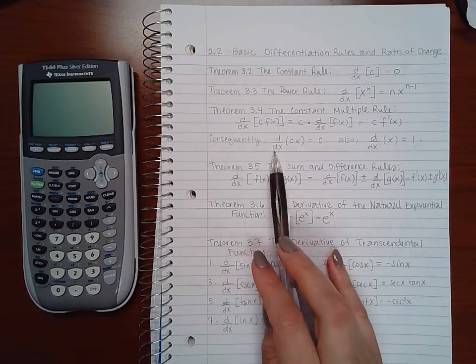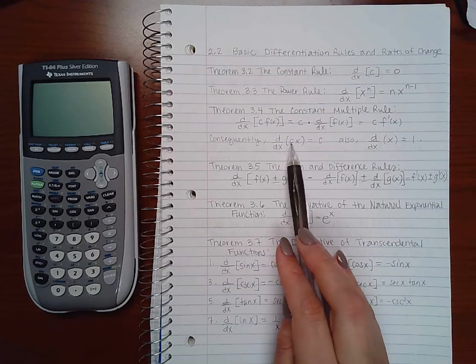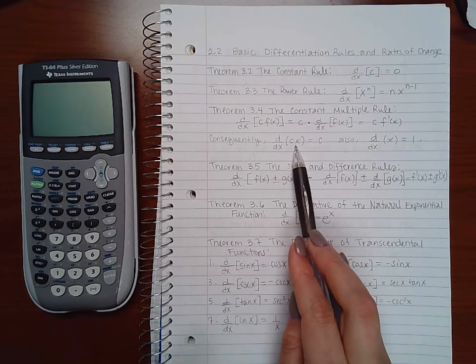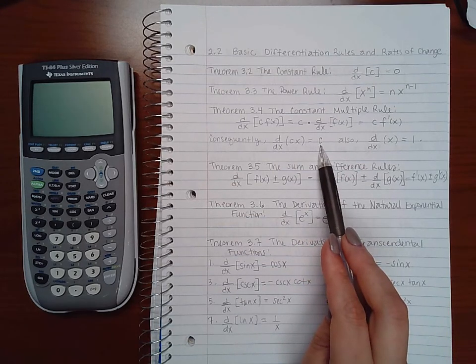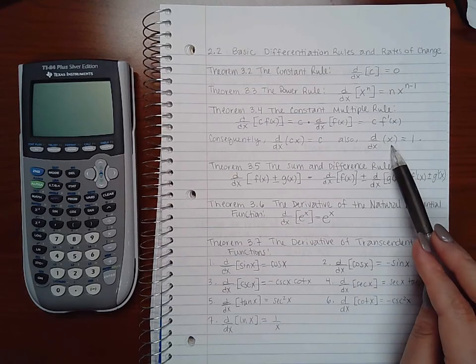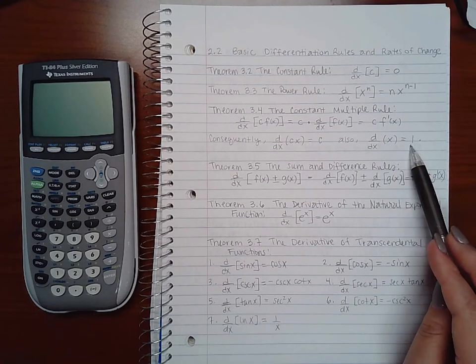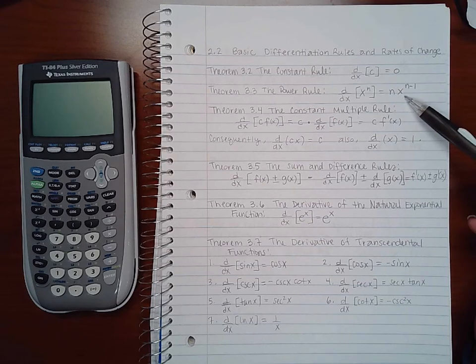Now consequently, if you have the derivative of a constant times x, like 5x, or 4x, or negative 2x, things like that, the derivative just ends up being the constant all by itself. And the derivative of x all by itself is just 1. And those are consequences of these rules here.